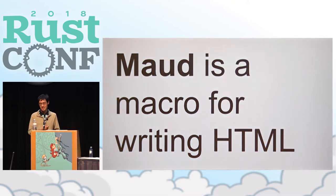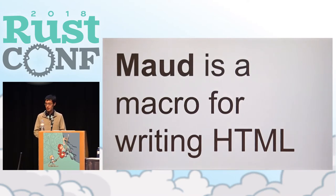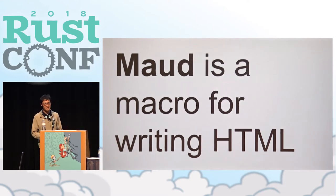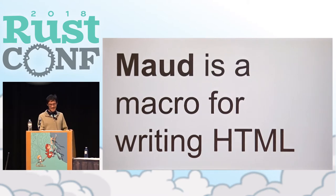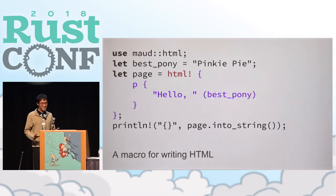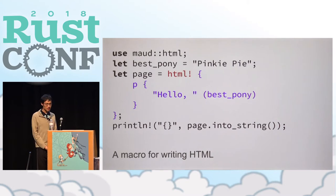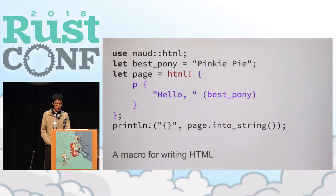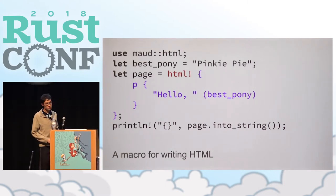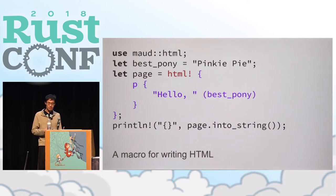Put simply, Maud is a procedural macro that enables you to write HTML inline within your Rust programs. And yes, it is named after the My Little Pony character — it was a while ago, please don't judge. This program generates a bunch of HTML and prints it to standard output, calling a macro called HTML with completely custom syntax inside.